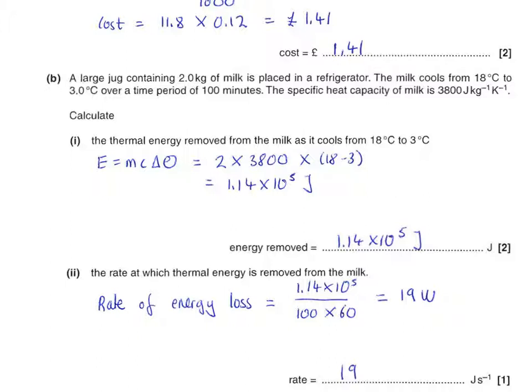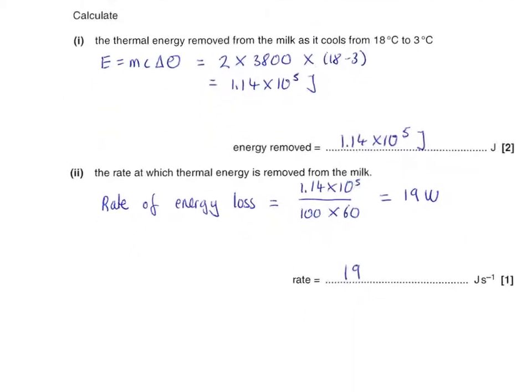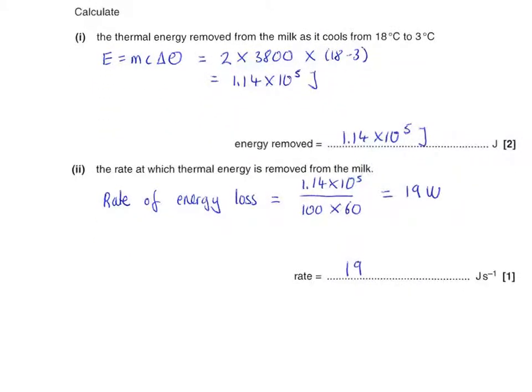And then I guess it's a G481 synoptic question: the rate at which thermal energy is being removed from the milk. Simply the amount of energy removed, 1.14×10⁵, divided by the time in seconds—it was 100 minutes, so we need 100×60—19 watts, or 19 joules per second. They're obviously entirely equivalent.